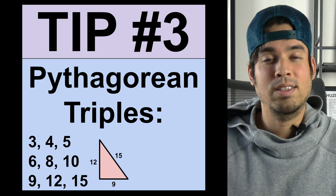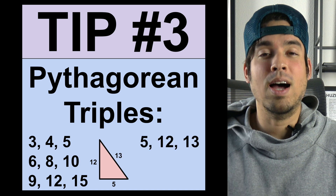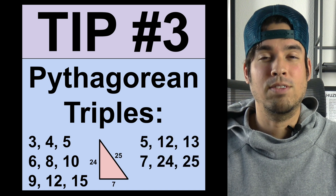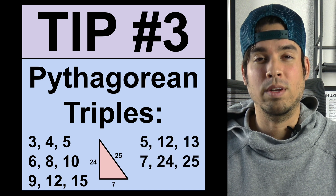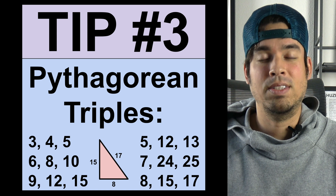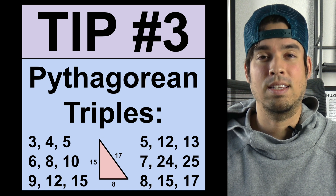Other common Pythagorean triples include 5-12-13, 7-24-25, and 8-15-17.